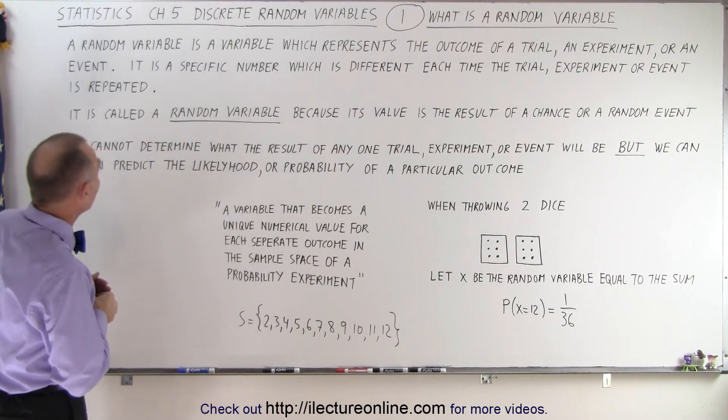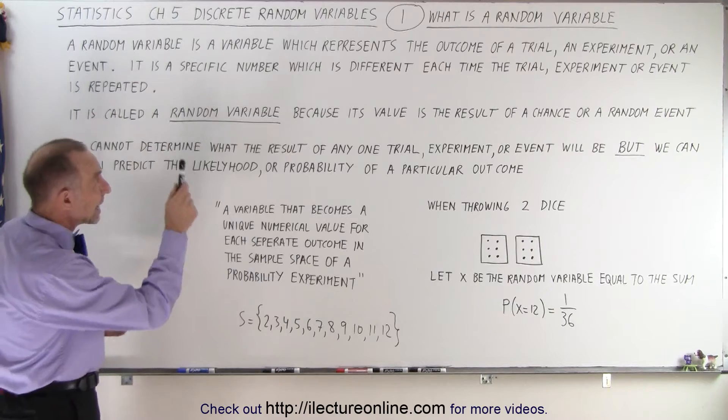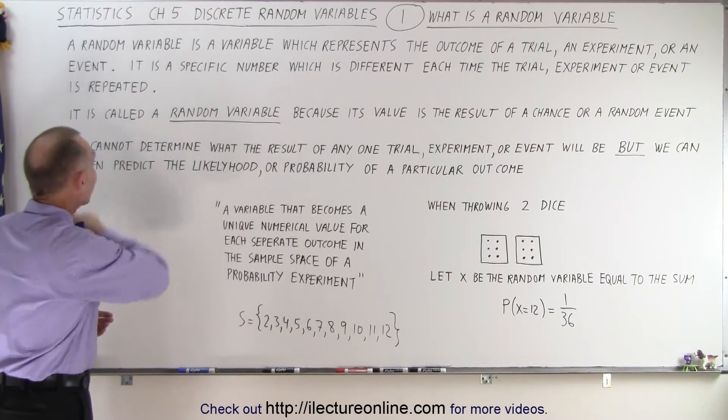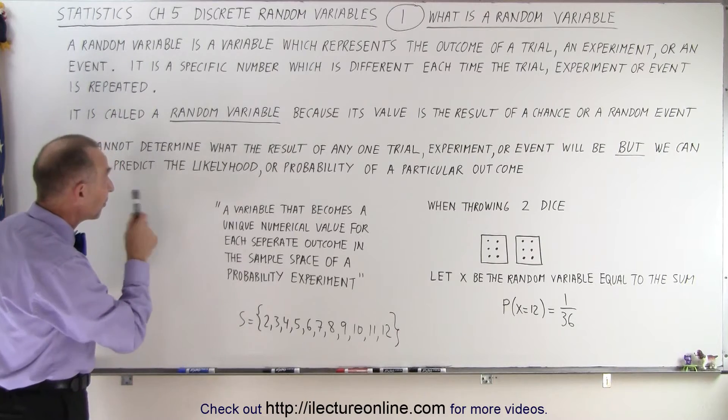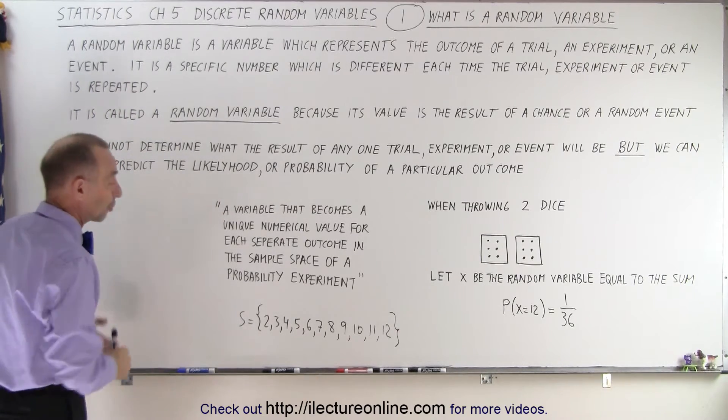So let's read some of the definitions. A random variable is a variable which represents the outcome of a trial, an experiment, or an event. It is a specific number which is different each time the trial, experiment, or event is repeated.